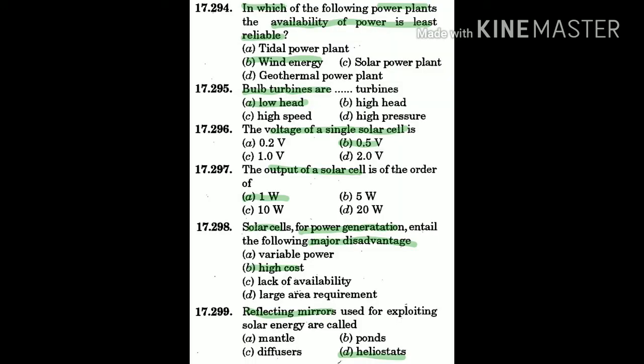Question 294: In which of the following power plants is the availability of power less reliable? The answer is B: wind energy.